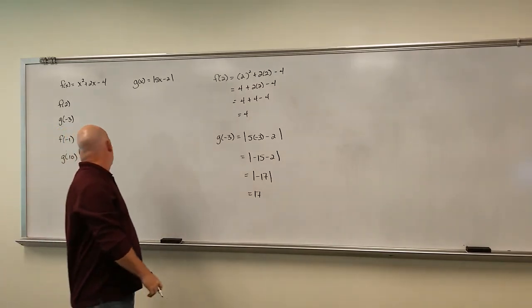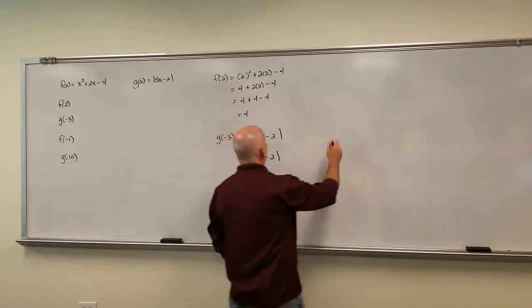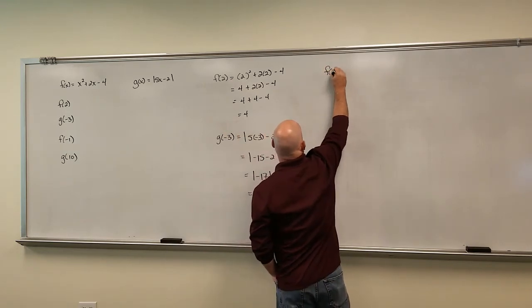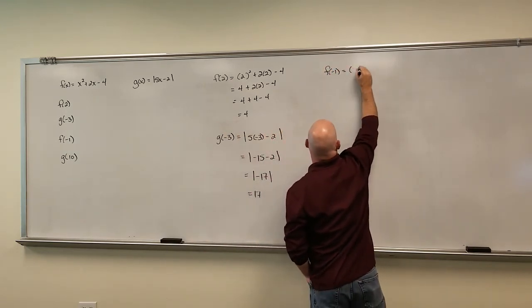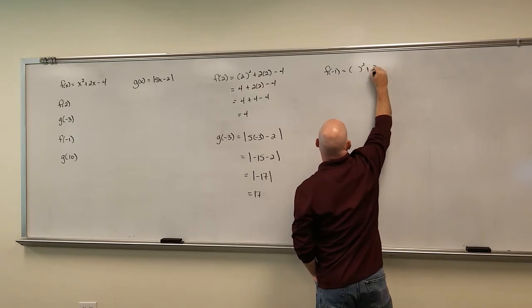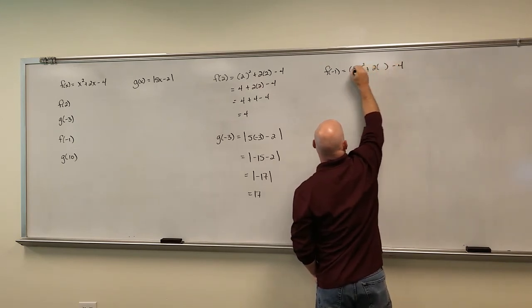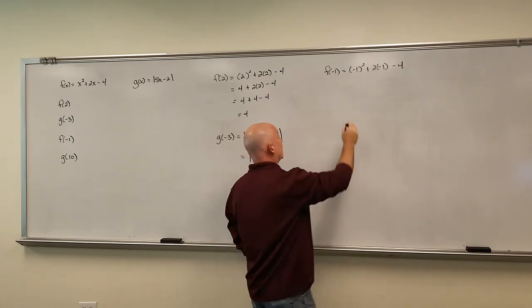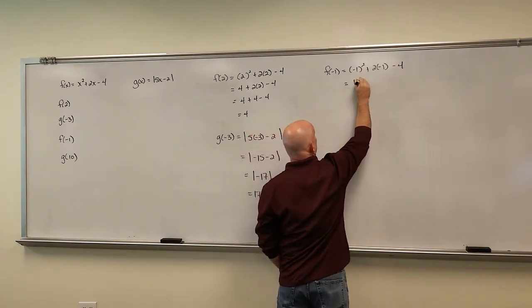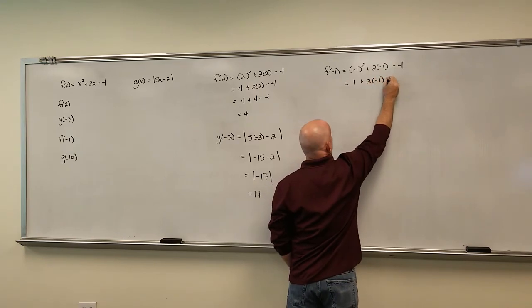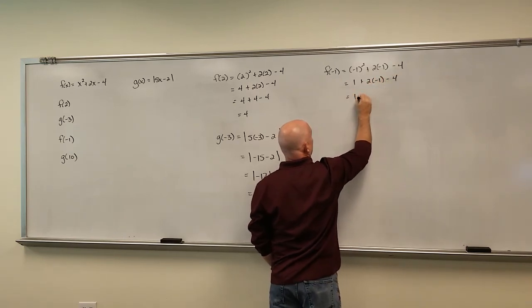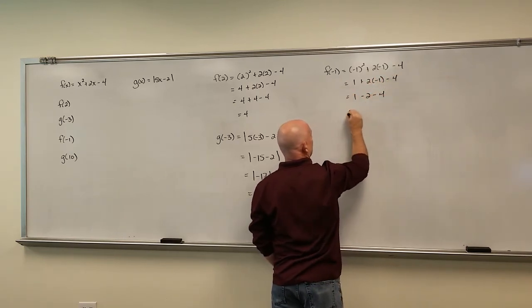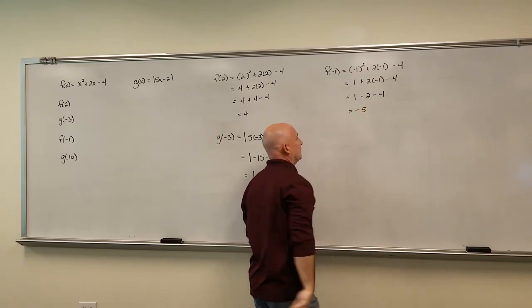All right, still moving along. What was my next one? I said f(-1). So if I try that, f(-1), again we're going to replace that with parentheses. (-1)² + 2(-1) - 4, and we're going to plug a -1 in. Using our order of operations, we're going to do those exponents first. So -1 squared is 1. 2 times -1 minus 4. 1 - 2 - 4. Combine all of our like terms, that's -5.